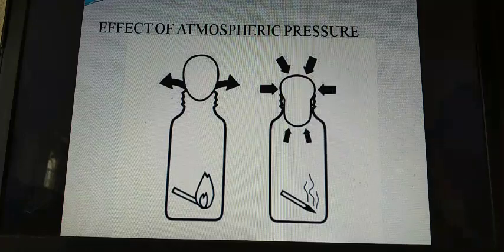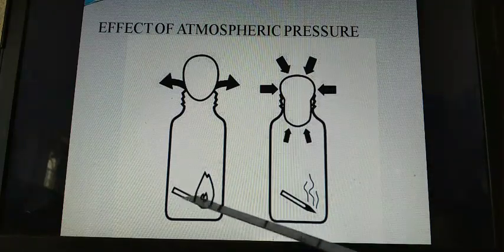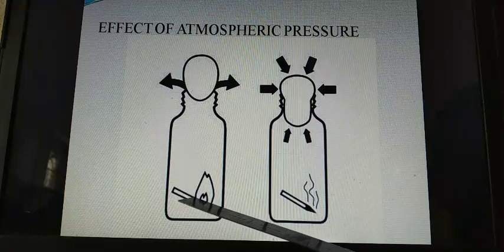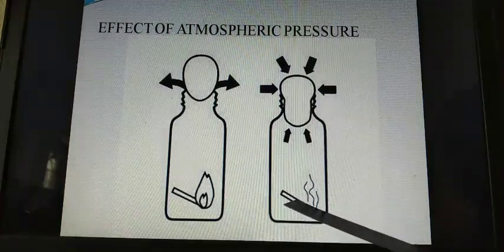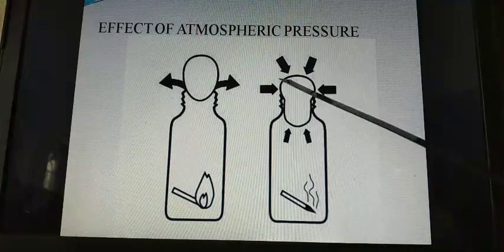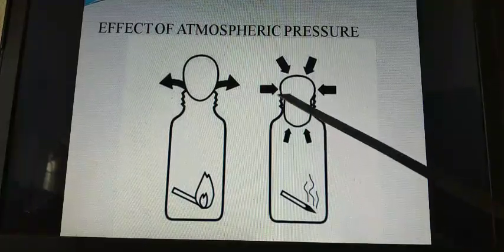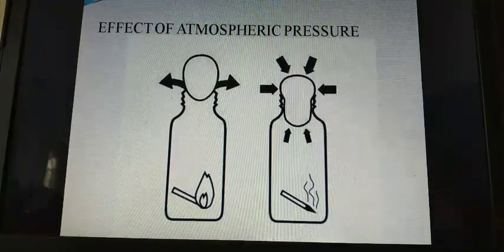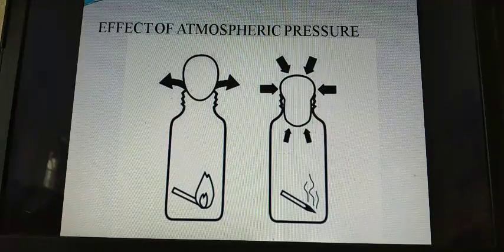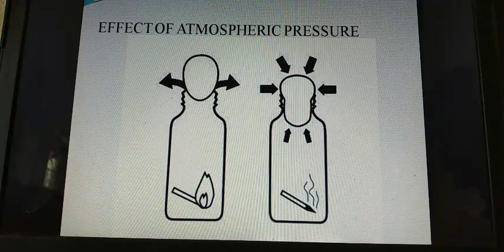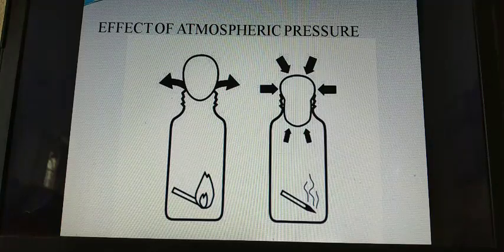Take a piece of paper. Burn it and drop it inside the flask. Wait for a few seconds. Let it burn fully. Now, keep the egg again on the mouth of the flask. Wait for a few minutes. What do you observe? We can see the egg placed at the mouth of the flask gets compressed and it falls into the flask due to the atmospheric pressure.